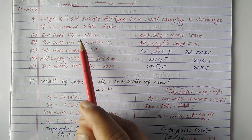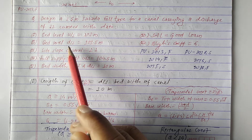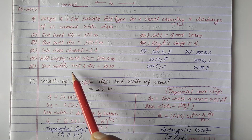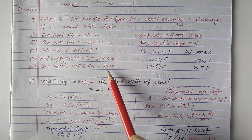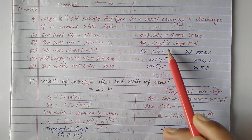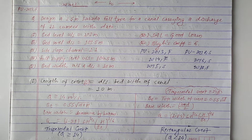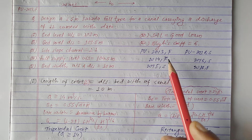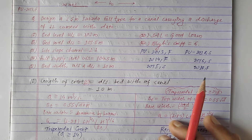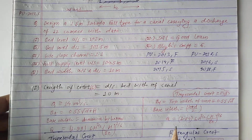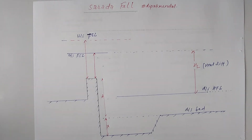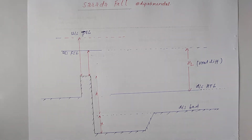The given data includes: bed level of upstream equal to 103 meters, bed level of downstream 101.5 meters, side slope of channel 1:1, full supply level 104.5, bed width of upstream and downstream equal to 10 meters, sill type — good loom, and blade coefficient equal to 6. This question has been asked in exams more than 10 times, so it will be very important for the final examination. You must watch this video until the end.